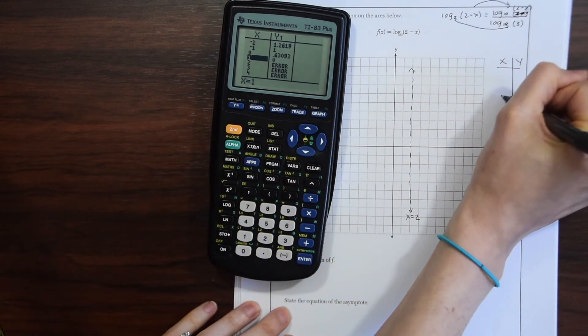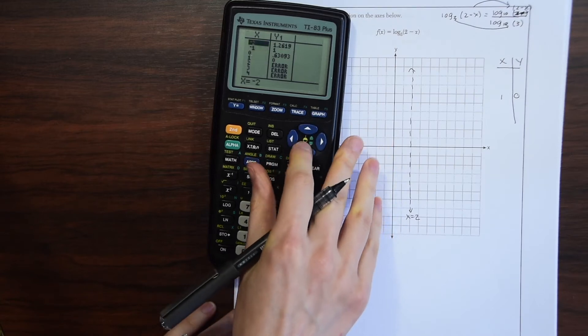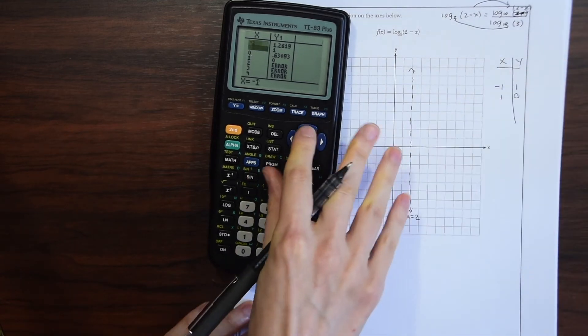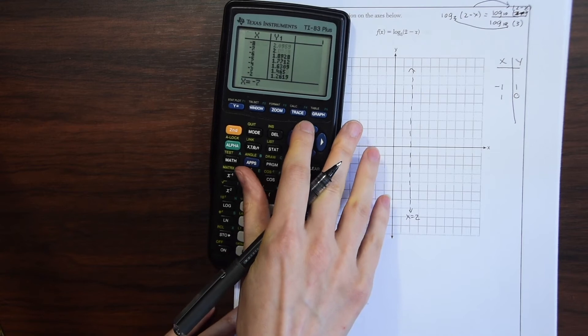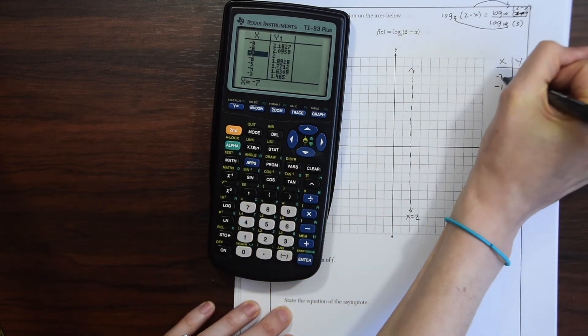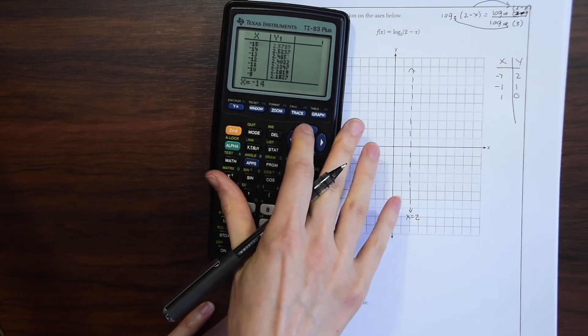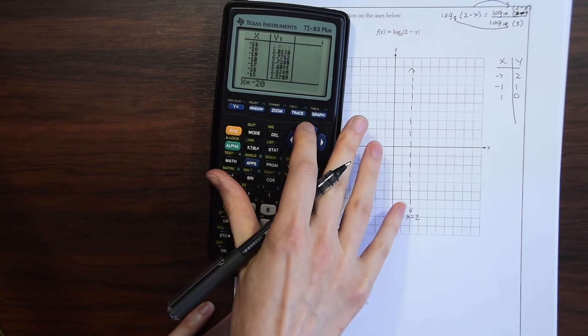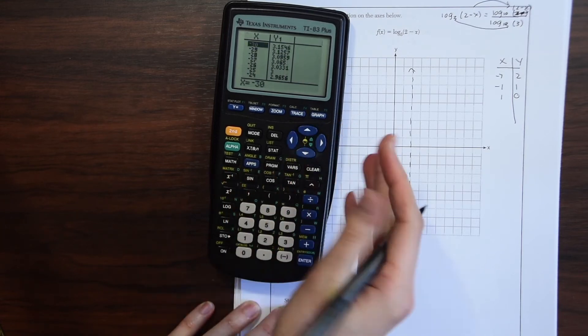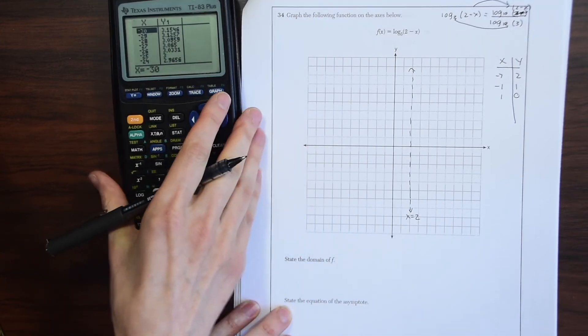We have the point (1, 0), and let's go up, we have (-1, 1). Let's keep going and we have (-7, 2). So these are our main coordinates that we're going to plot, and if we keep going, notice we're just going over to the left very slowly.